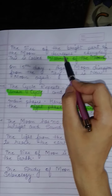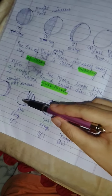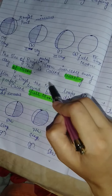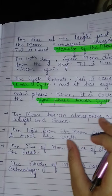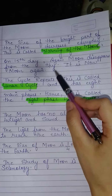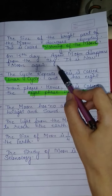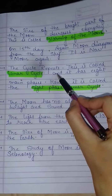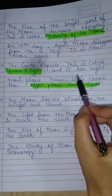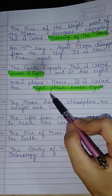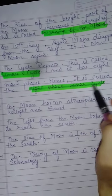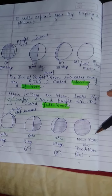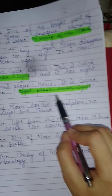When the bright part of the Moon increases, we call it waxing of the Moon. On the 15th day again the Moon disappears from the sky. This complete cycle is called the lunar cycle, and it has eight main phases — hence it is called the eight-phase lunar cycle. We count eight stages in total.